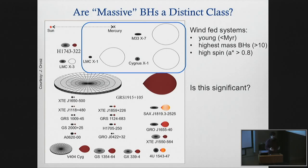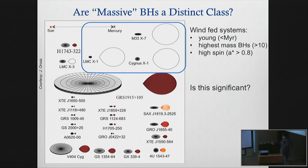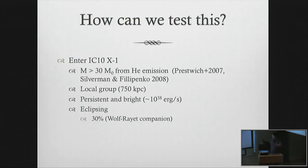Tassos Fragos recently showed that these transient systems can actually produce all their spin by being born with zero spin and accreting their spin over time. These wind-fed systems haven't had the time to do that, so they must have been born with high spin. But there are only three of them, so we're interested in asking: is this actually evidence of a distinct population, or is this just a small number fluke? In the quest to address this, we were very interested in measuring the spin of other very massive and persistent black hole systems.